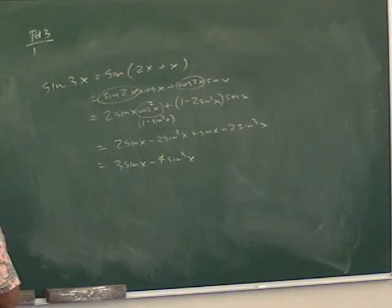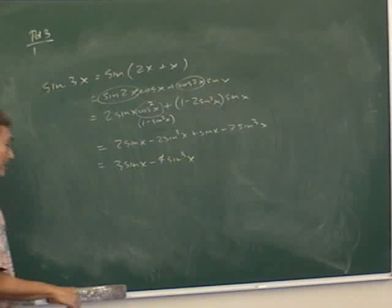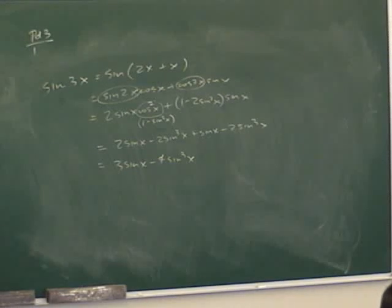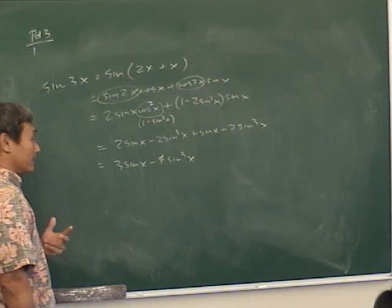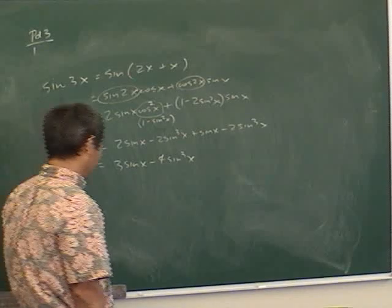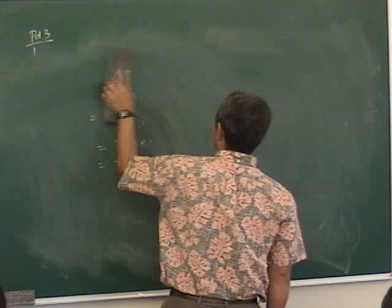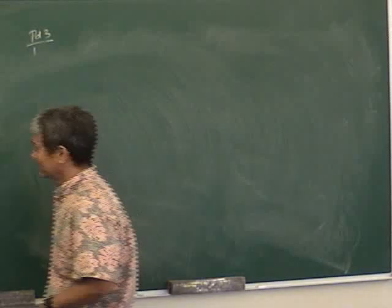The triple angle identity for sine is: sine(3x) = 3·sine x − 4·sine³x. Math team people commit this to memory. There is actually one more lecture to come.